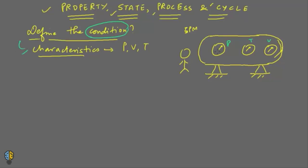When the time comes to leave for home, your friend comes in to replace you and take care of the system. Before you leave, you will have to define the condition of the system — you tell your friend that the system is at this much pressure, this much temperature, and it contains this much volume. What you have just done is defined the various characteristics of the system to your friend so that he can take care of it.